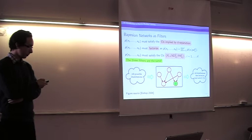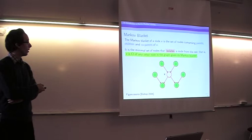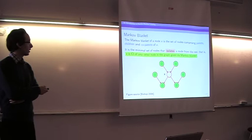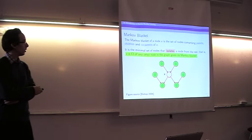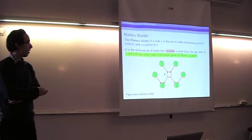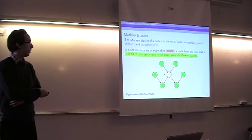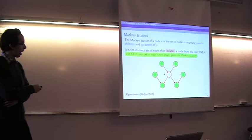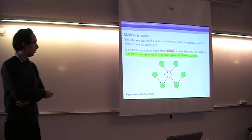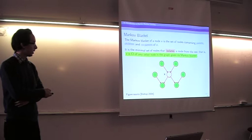The Markov blanket of a node in a Bayesian network is the set of nodes such that when we condition on those nodes, the node is isolated from the rest of the network and becomes conditionally independent of all other nodes. The Markov blanket of a particular node consists of its parents, its children, and its co-parents — where co-parents are the parents of the children of X.